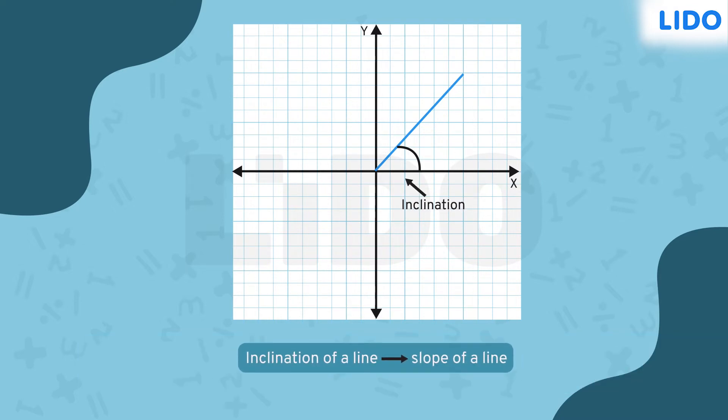The inclination of a line helps to determine a very important factor called the slope of a line. Slope describes the steepness of a line. Slope of a line denoted by the letter M is calculated by taking the tangent of the inclination. Greater the inclination, greater is the value of the slope.